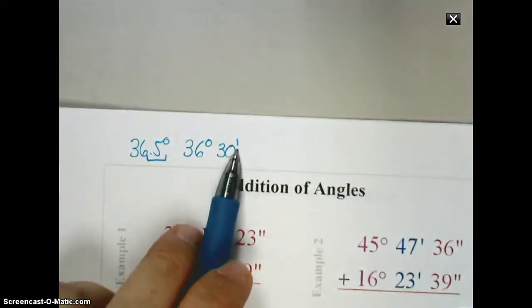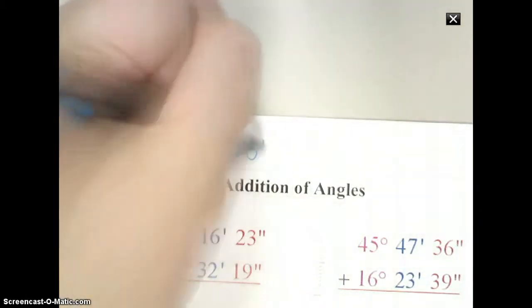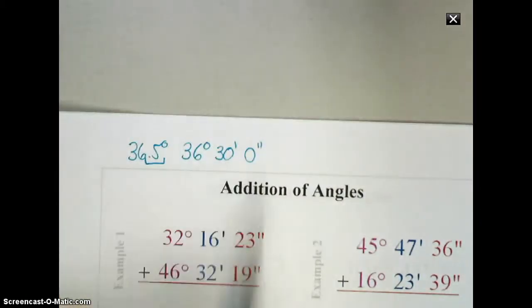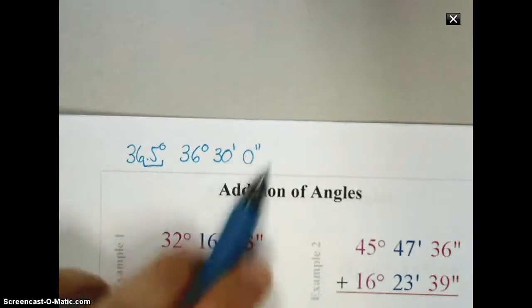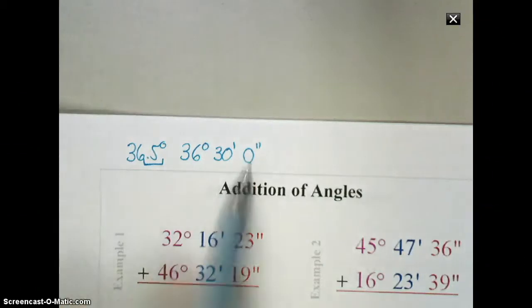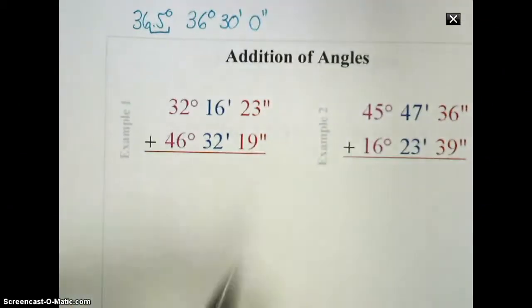The symbol for minutes is this single apostrophe, which is the same symbol used for feet, and the symbol for seconds is going to be the symbol we traditionally use for inches, or the quote symbol. Now, normally, you won't actually have to write zero seconds. If there are no seconds, you don't have to worry about adding that in.